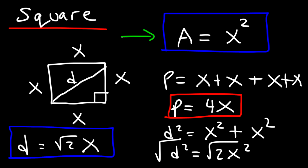So those are the three main equations for the square: the area, which is x squared; the perimeter, which is 4x; and the length of the diagonal, which is the square root of 2 times x.